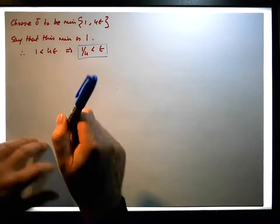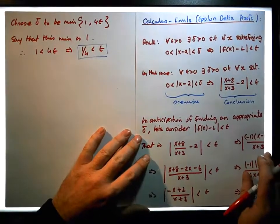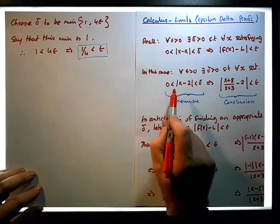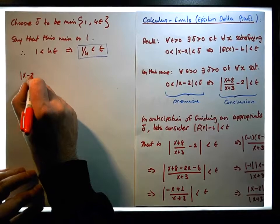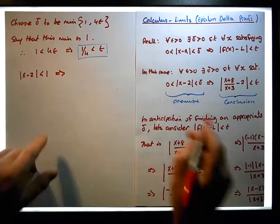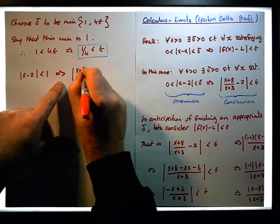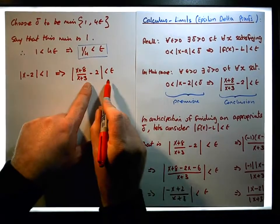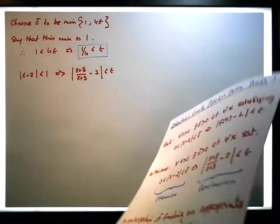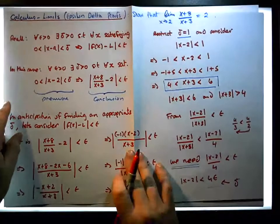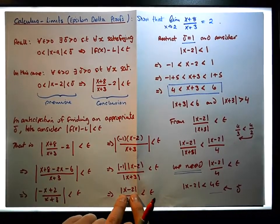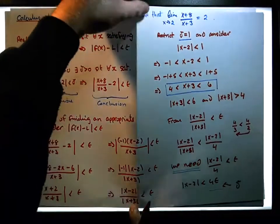Now let's do the proof. Let's take our premise. What we know is that we're choosing delta to be equal to one. So what we have is that we need x minus two is less than one, and we need to infer that x plus eight all over x plus three minus two is less than epsilon. We know from our reduction that x plus eight all over x plus three minus two is in fact the absolute value of x minus two all over the absolute value of x plus three.